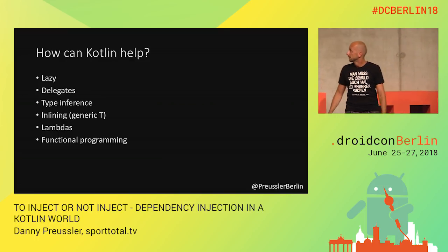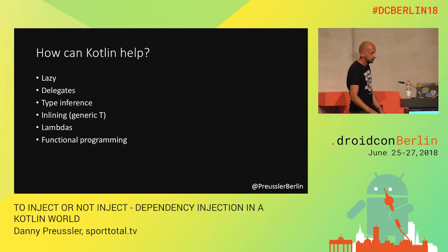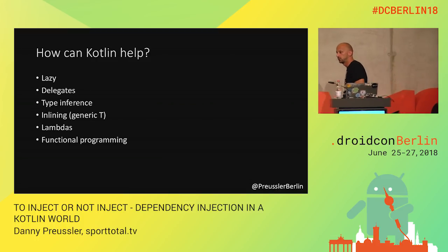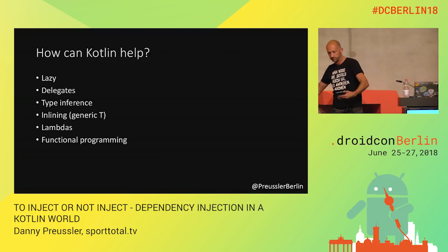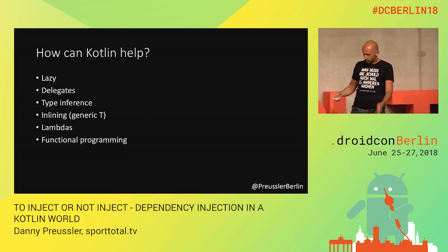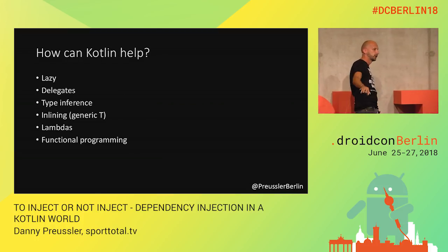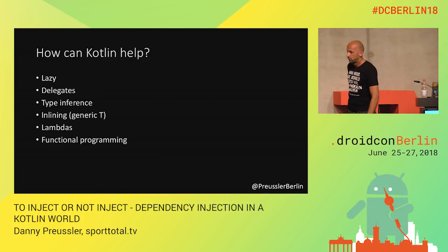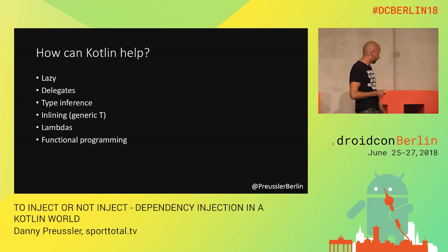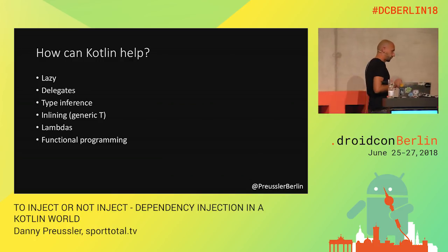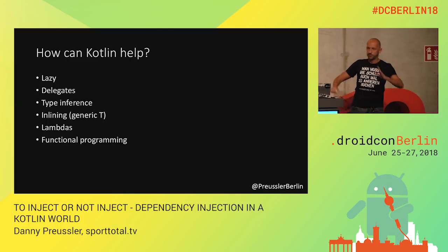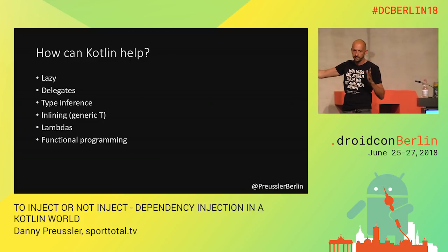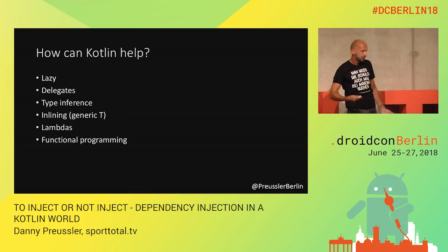Kotlin has lazy, delegates — lazy is a delegate so you can write your own delegates. Type inference, the whole inlining with reified types so you can ask a generic for its actual type. Lambdas, all the functional programming. And especially in functional programming, dependency injection changes — it's a function, and at some point it disappears. There are nice articles about it — 'From Dependency Injection to Dependency Rejection' by Mark Seeman — but it's deep into functional programming.